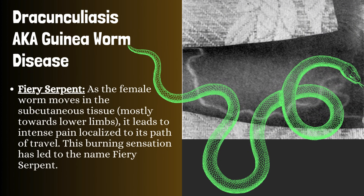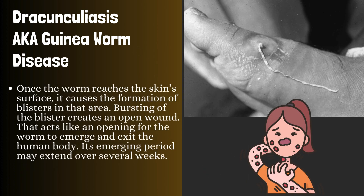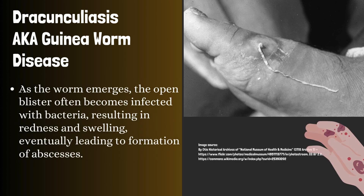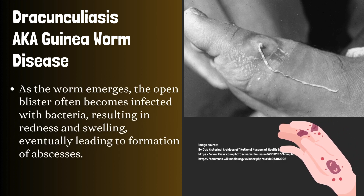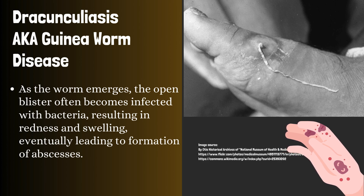What is meant by fiery serpent? As the female worm moves in the subcutaneous tissue, mostly towards the lower limbs, it leads to intense pain localized to its path of travel. This burning sensation has led to the name fiery serpent. Once the worm reaches the skin surface, it causes the formation of blisters in that area. Bursting of the blister creates an open wound that acts as an opening for the worm to emerge and exit the human body. Its emerging period may extend over several weeks. As the worm emerges, the open blister often becomes infected with bacteria, resulting in redness and swelling, eventually leading to formation of abscesses.